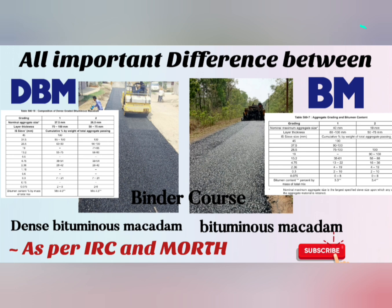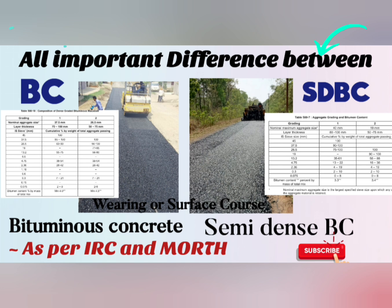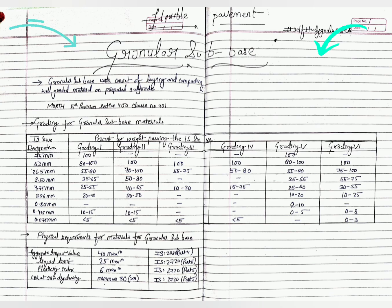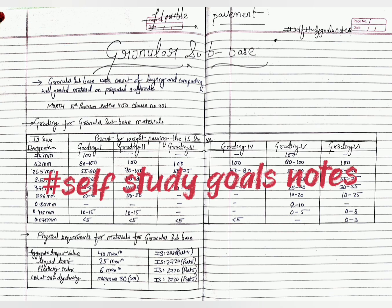In the previous lecture we covered the difference between DBM and BM — Dense Bituminous Macadam, Bituminous Macadam, Bituminous Concrete, and Semi Dense Bituminous Concrete. If you haven't covered those, go to the flexible pavement playlist. In the next lecture we will cover different grading for granular sub-base and coatings for flexible pavement.